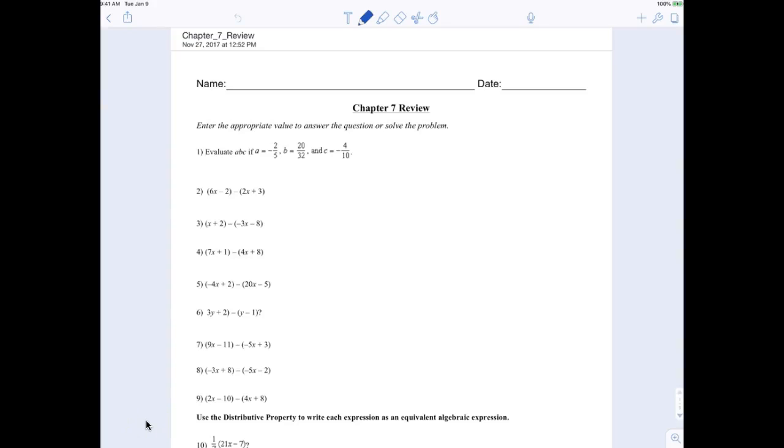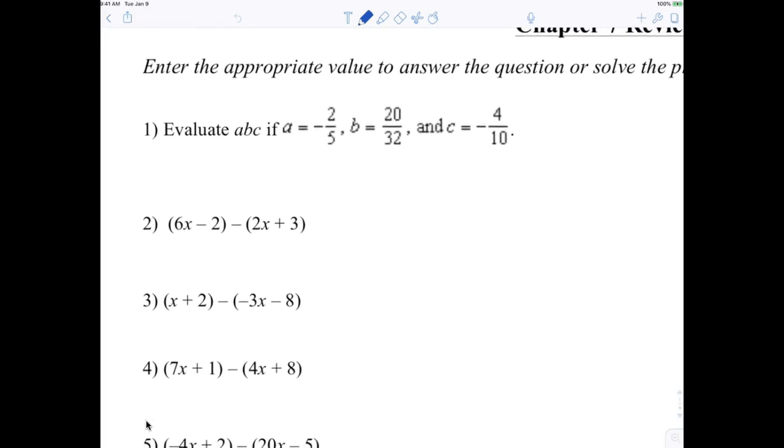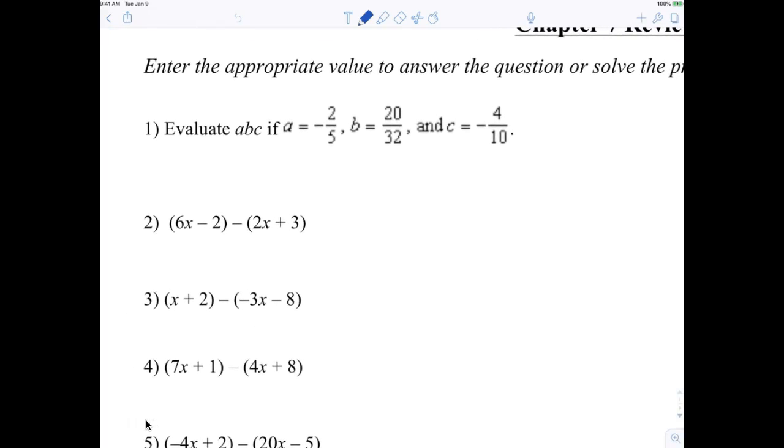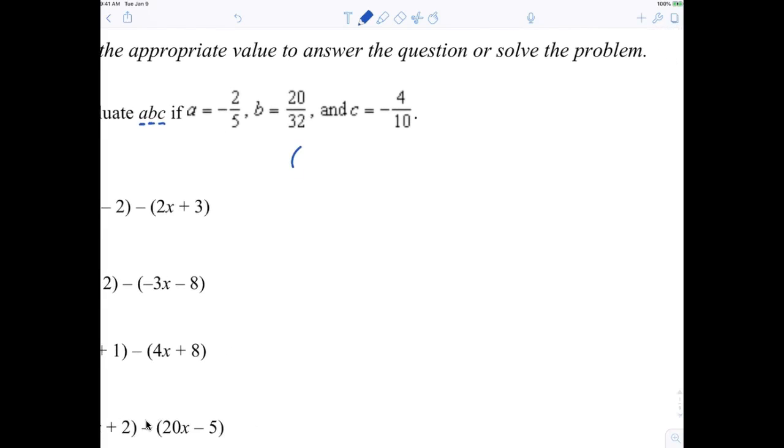Okay, now for us real quick, I just, I don't know why I put this in here, but just to practice our fractions. This means to do what? Multiply A times B times C. All right, we're multiplying A times B times C. So here we go. We're going to practice negative 2 fifths times 20 over 32 times negative 4 over 10. Everybody agree with that?